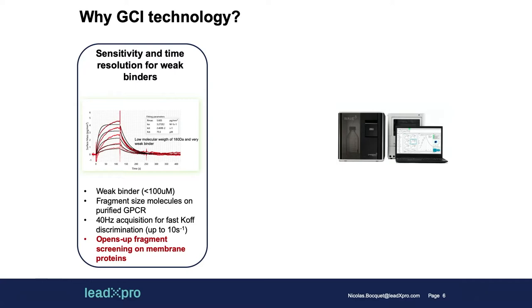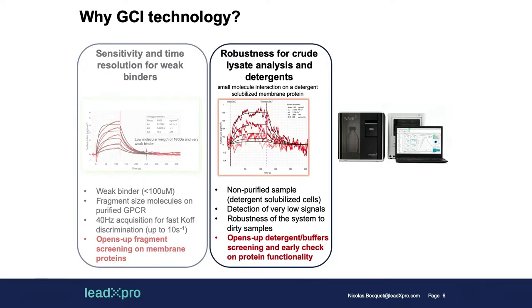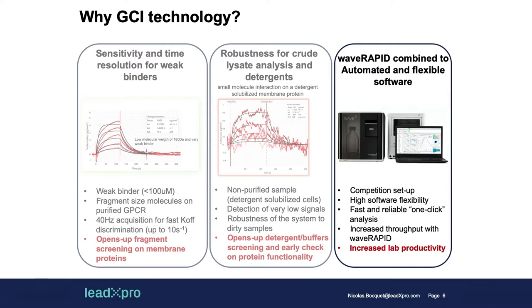First, we evaluated the sensitivity of the instrument, and the sensitivity turns out to be extremely high. We were able to record weak binders of very small size. For example, in the graph on the left, you can see a binder which is double-digit micromolar on the GPCR, and we were still able to record the kinetic data of this compound. In addition, we can acquire data at 40 Hz, which is very useful for weak binders with very fast kinetics, and it opens up fragment screening on membrane proteins. Sensitivity is really a crucial point for us, because when we purify a membrane protein, the percentage of active protein is never very high.